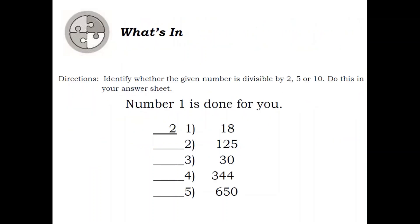Common factors are factors that are the same for 2 or more numbers. What's In? Directions: Identify whether the given number is divisible by 2, 5, or 10. Do this in your answer sheet. Number 1 is done for you. Number 1: 18. Answer: 2. Number 2: 125. Answer: 5. Number 3: 30. Answer: 2, 5, and 10. Number 4: 344. Answer: 2. Number 5: 650. Answer: 2, 5, and 10.